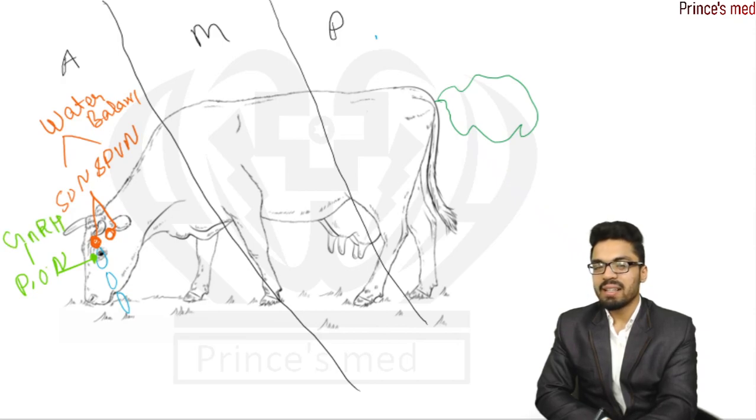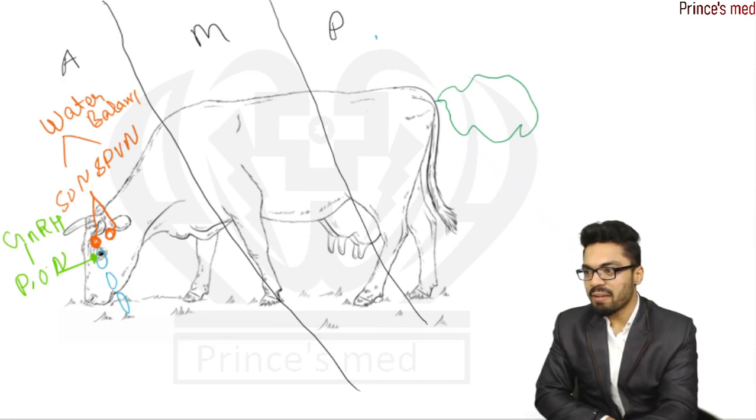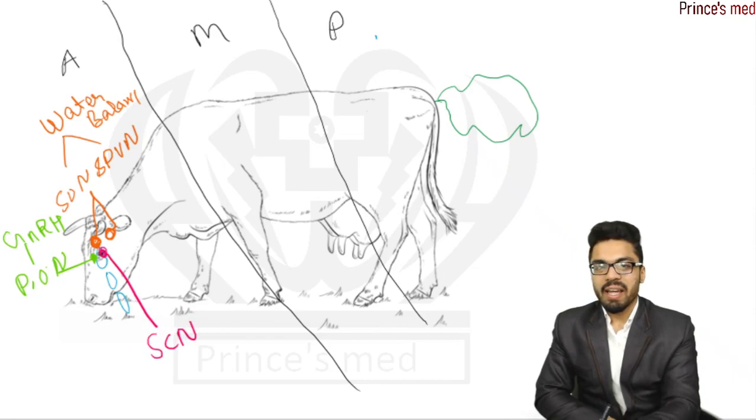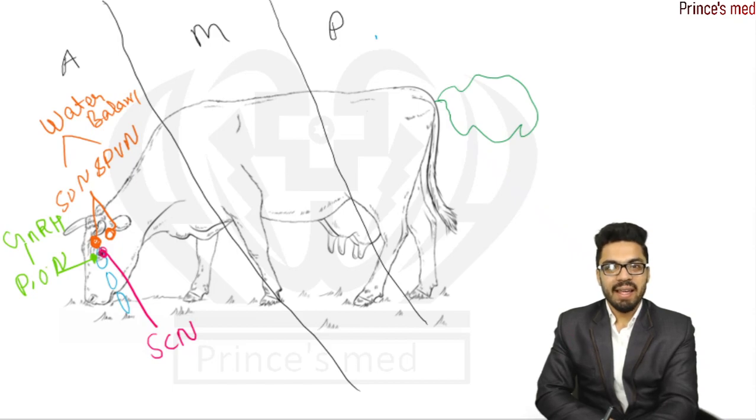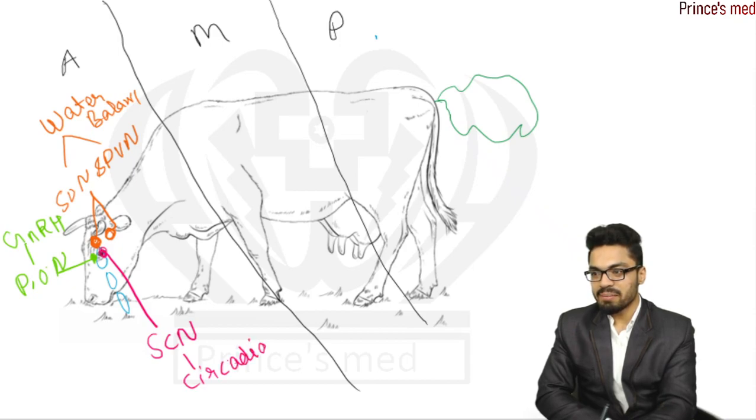And on the eyes we have suprachiasmatic nucleus, and during night time eyes are closed, eyelids are closed, so related to day night. So circadian rhythm, suprachiasmatic has function of circadian rhythm balance.